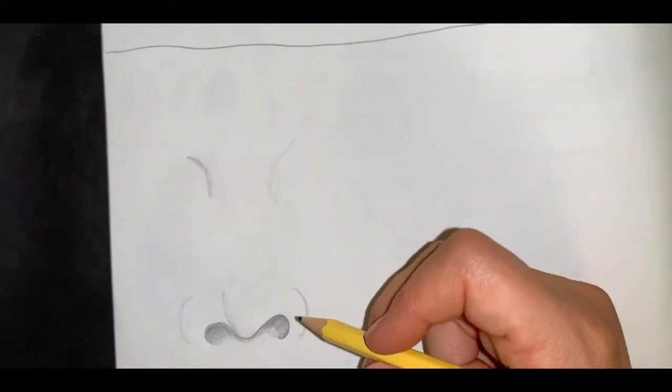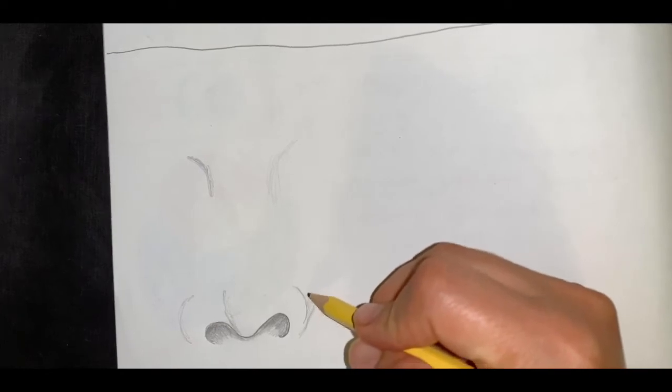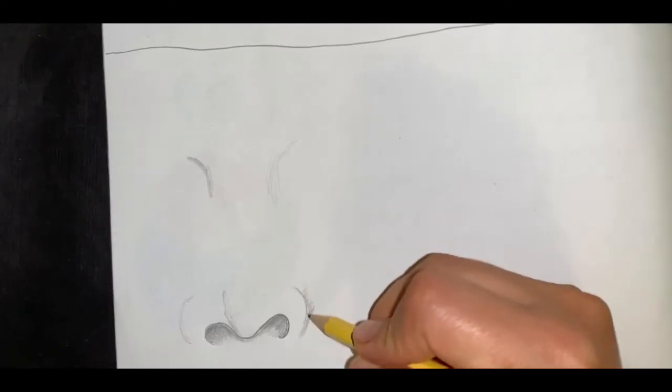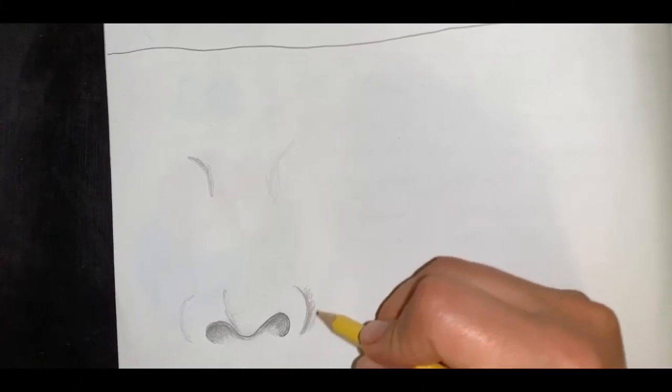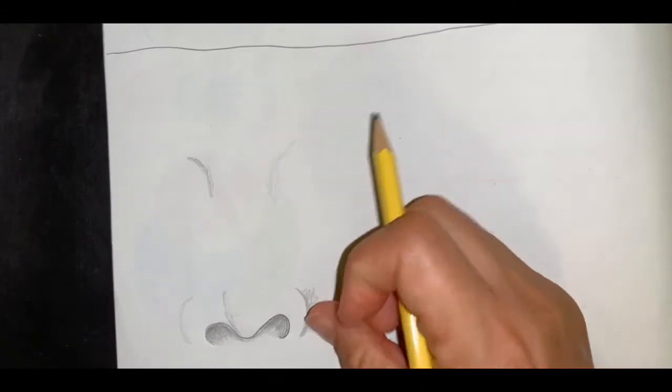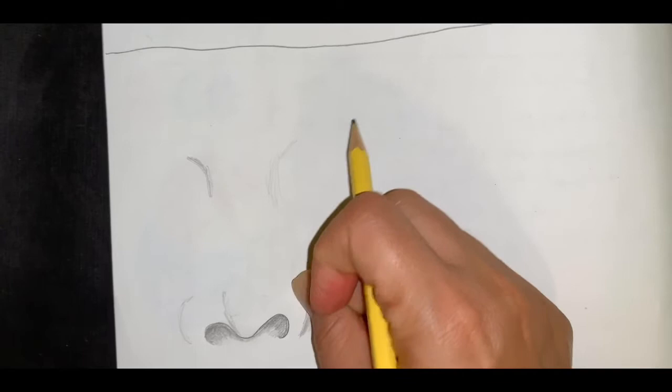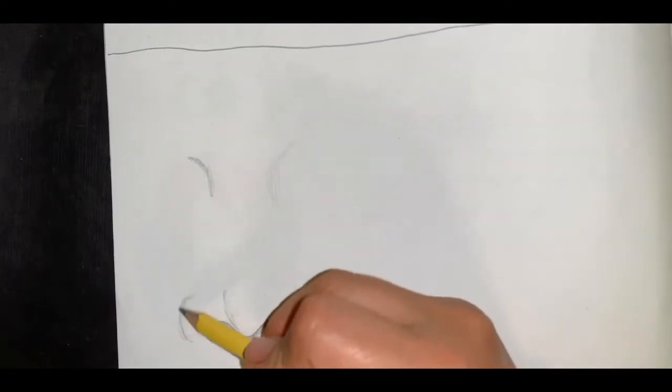Here we're going to add a little shading on the outside, the outer edge of the nose, because our nose casts a lot of shadows. And on this side as well.